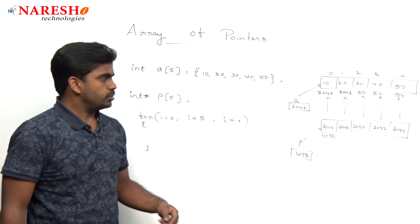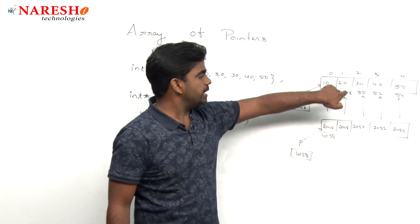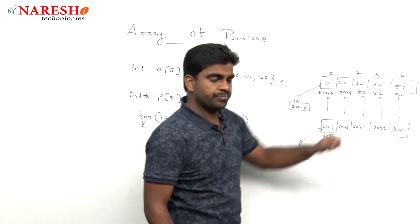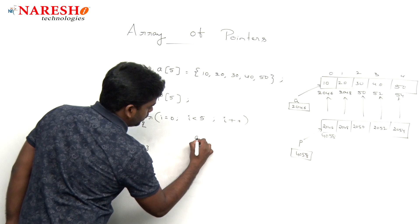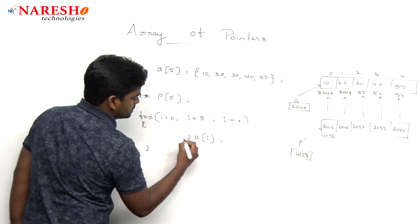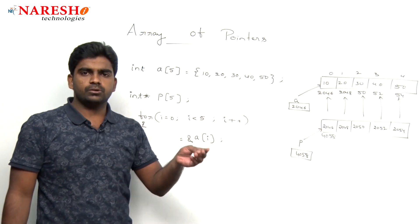Simply how can we store? a of 0 address, a of 1 address, a of 2 address, a of 3 address is nothing but a of i address because i value varies 0, 1, 2, 3, 4.